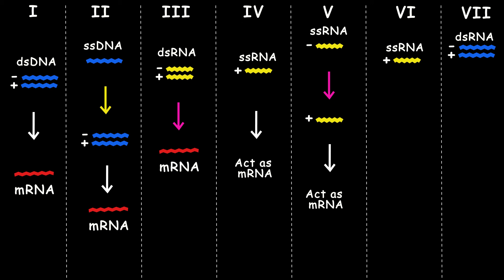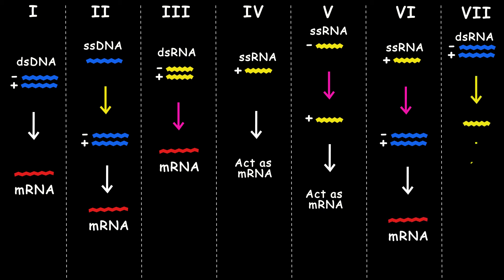This group doesn't translate their mRNA right away like group four. Instead, they have a very special enzyme called reverse transcriptase that can make double-strand DNA from this RNA. Then they integrate it into the host genome. Group 7 has both RdRp and reverse transcriptase enzymes, but their genetic material is a double-strand DNA with an RNA intermediate.